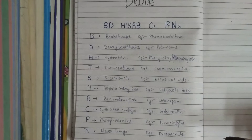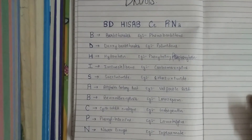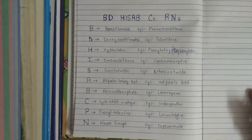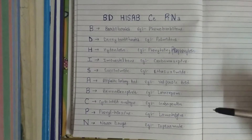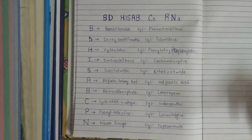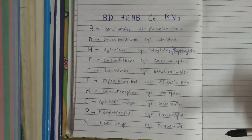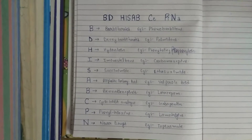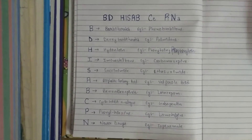P stands for phenyltriazine, for example, lamotrigine. N stands for newer anti-epileptic drugs, for example, topiramate. Now I also have some important points for some of these drugs to discuss.